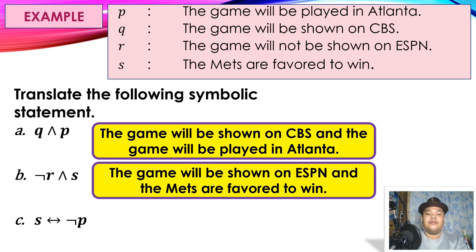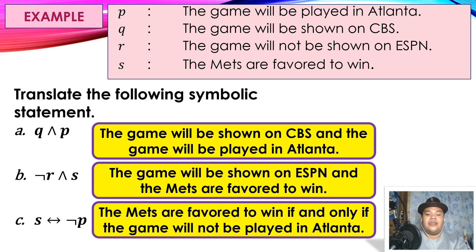For the bi-conditional example: S ↔ ¬P. S is 'The Mets are favored to win'; ¬P means 'The game will not be played in Atlanta.' Therefore, the final answer is: 'The Mets are favored to win if and only if the game will not be played in Atlanta.'